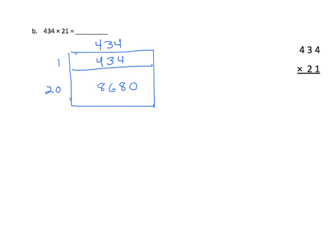Let's now go over to our standard algorithm. First we're multiplying from the ones place, just like we did in the area model. And I have one one times four ones is four ones. I have one one times three tens, which is three tens. And I have one one times four hundreds, which is four hundred.